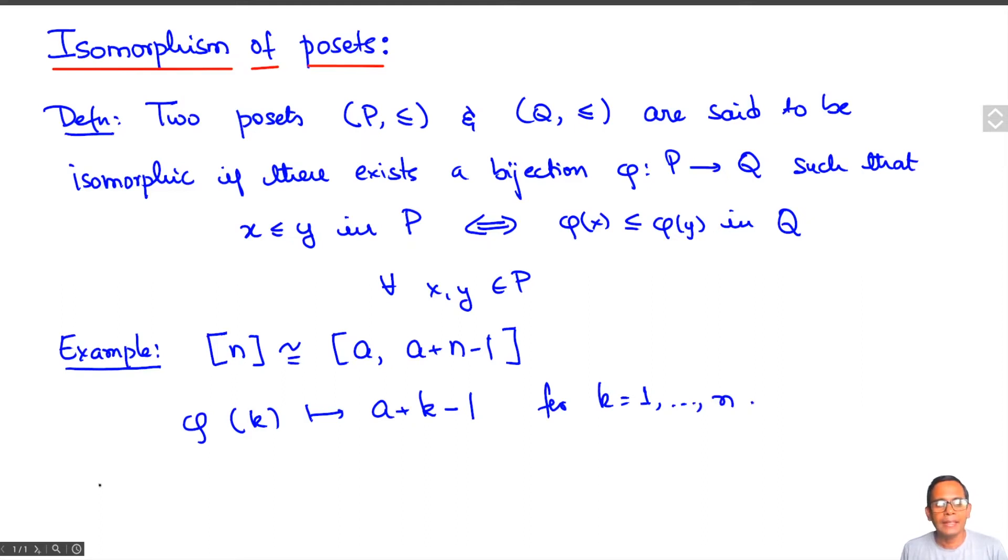In fact, any two chains of the same finite cardinality are isomorphic.